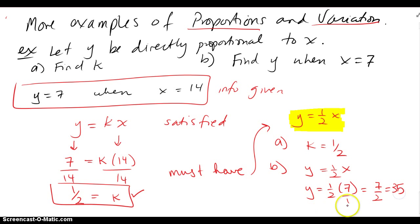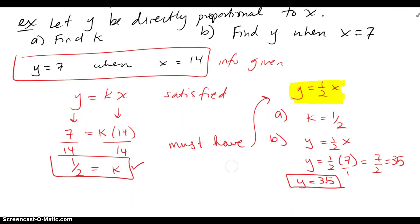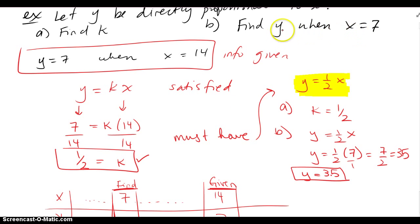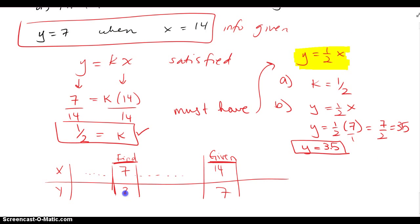So if you want to put it in decimal form, 3.5. So Y equals 3.5, which pretty much tells us that since K is 1/2, Y is going up by halves each step I take. So I can even look at it in table form. What we're given is that with this direct variation or direct proportion, X is 14 and Y is 7,